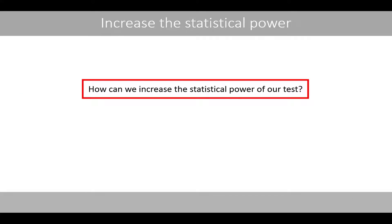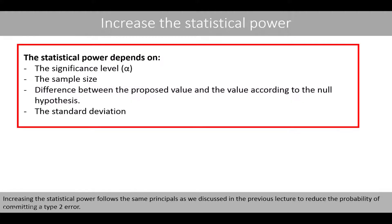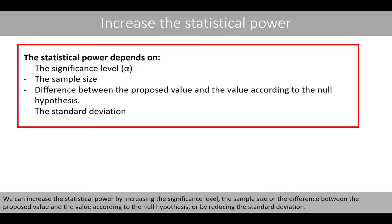So, how can we increase the statistical power of our test? Increasing the statistical power follows the same principles as we discussed in the previous lecture to reduce the probability of committing a type 2 error. We can increase the statistical power either by increasing the significance level, the sample size, or the difference between the proposed value and the value according to the null hypothesis, or by reducing the standard deviation.